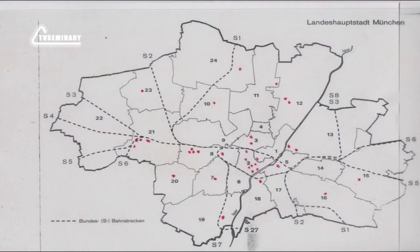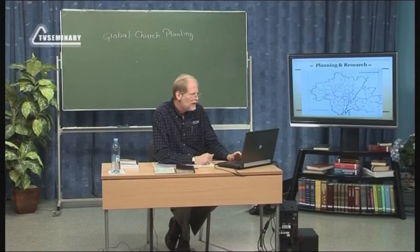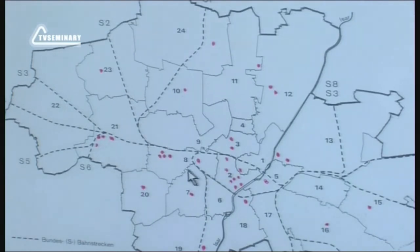Now each of these little red dots — and this is like a photograph of a moment in time about 20 years ago — each one represents a church we would consider a Bible-teaching, Christ-centered church. There were a few Lutheran churches, Baptist churches, Pentecostal, even a couple of house churches we counted. We tried to be very generous, considering any church that would be a light for Jesus Christ in their community.